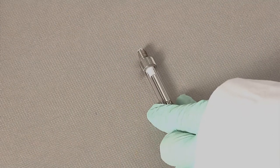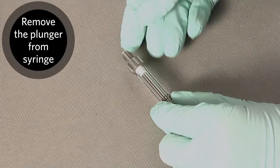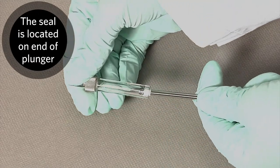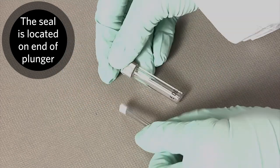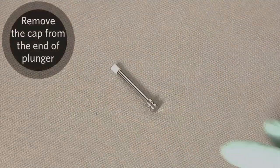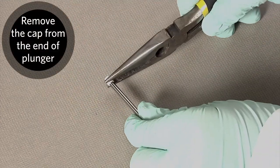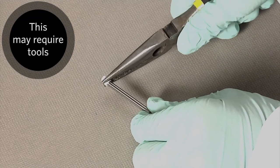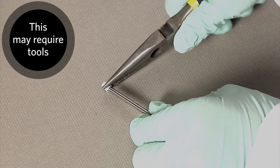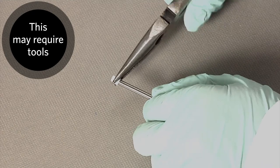Remove the plunger from the inside of the syringe. The seal is located on the end of the plunger. Remove the cap from the end of the plunger. Tools may be required to remove the seal if it cannot be done by hand.